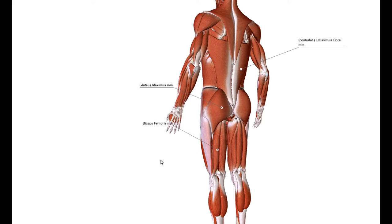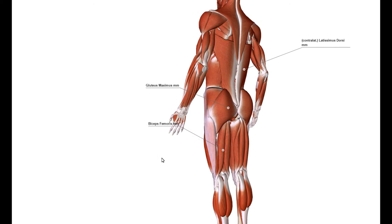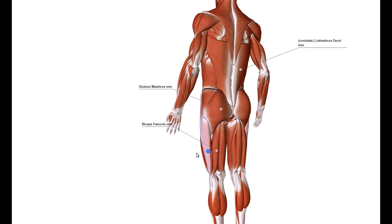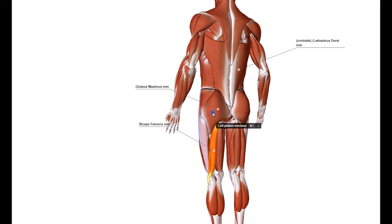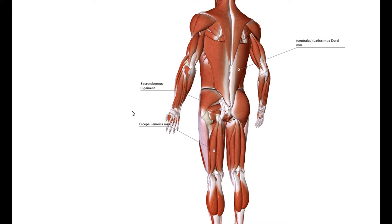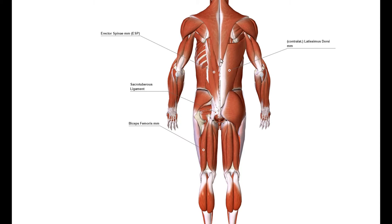Let's take a look at this one more time. The Deep Longitudinal Line consists of biceps femoris, ipsilateral gluteus maximus — ipsilateral meaning on the same side — the underlying sacrotuberous ligament, which connects the sacrum with the ischial tuberosity. That is what the name says basically: sacrotuberous ligament. Also included are the ipsilateral erector spinae group — iliocostalis, longissimus, and spinalis subdivisions — as well as contralateral latissimus dorsi.